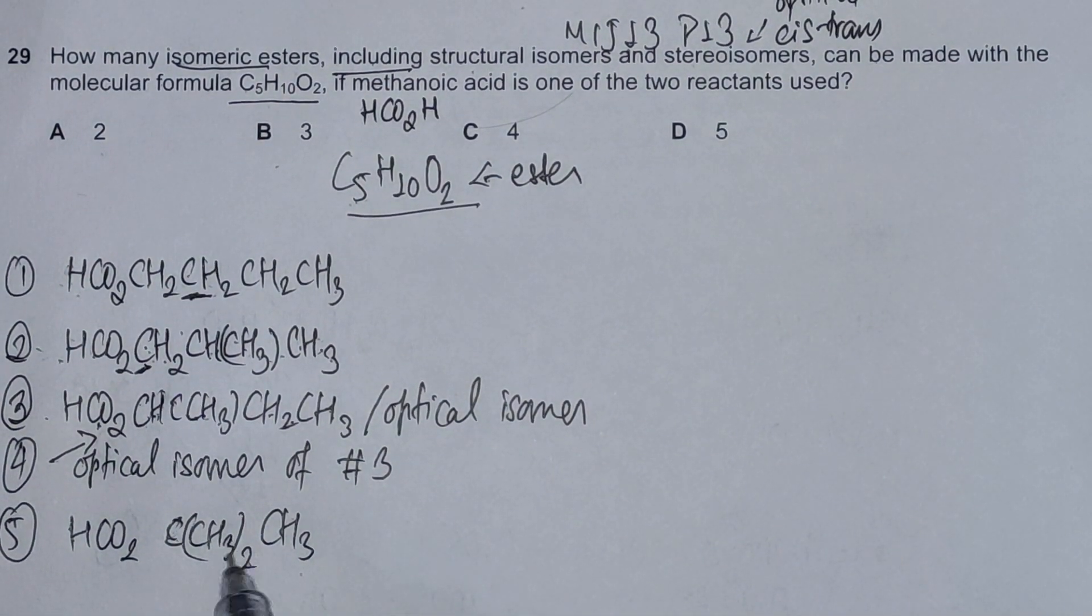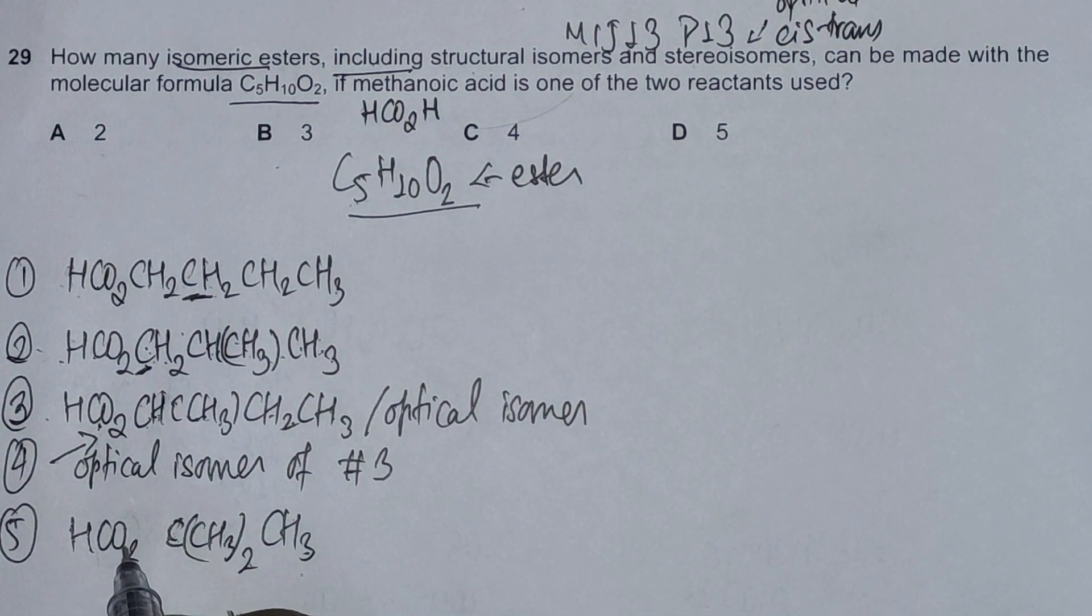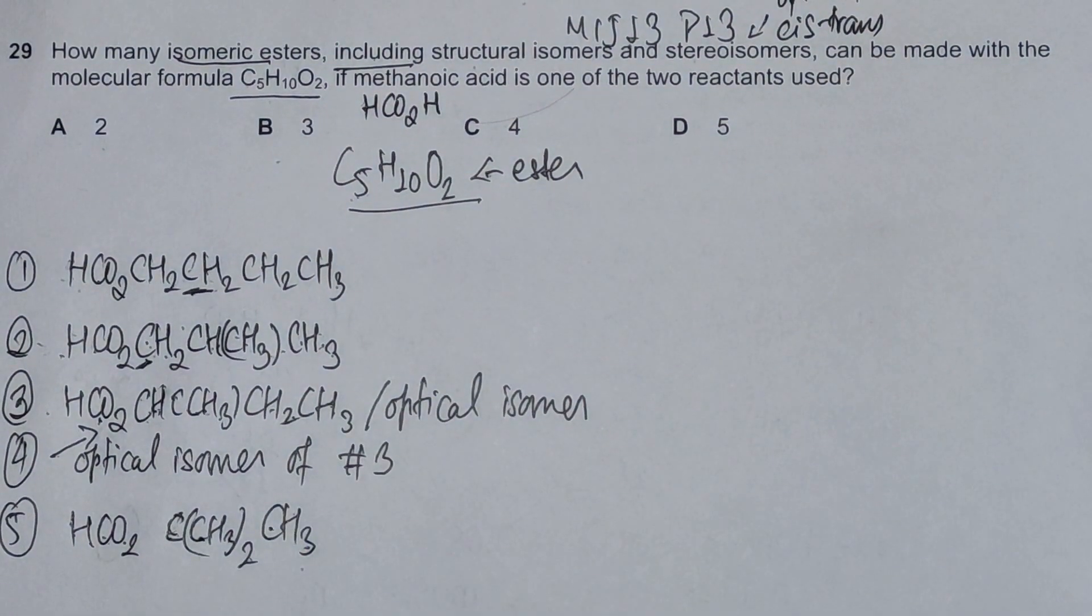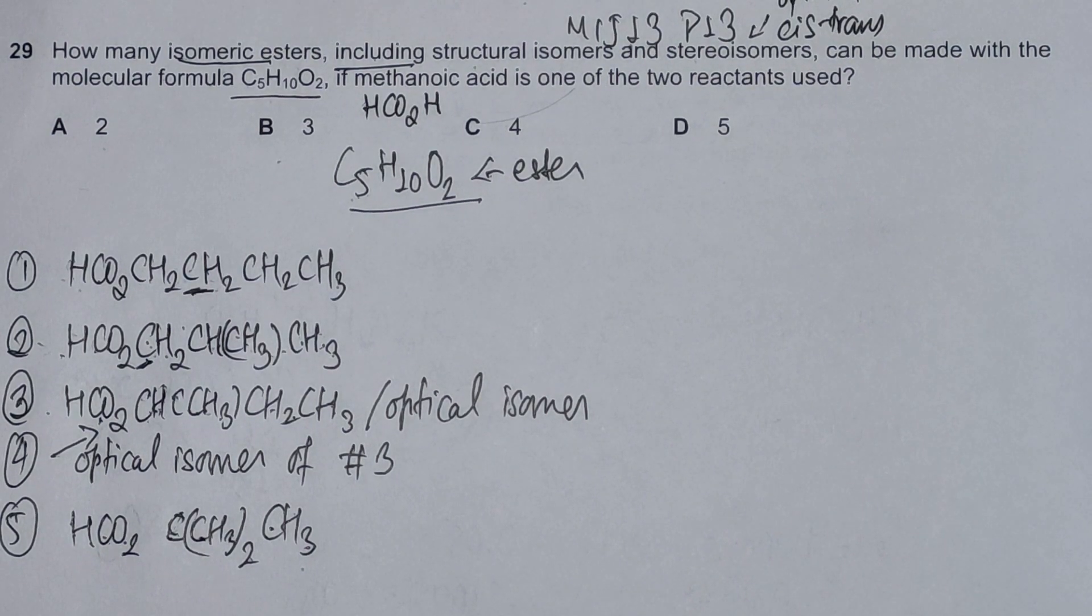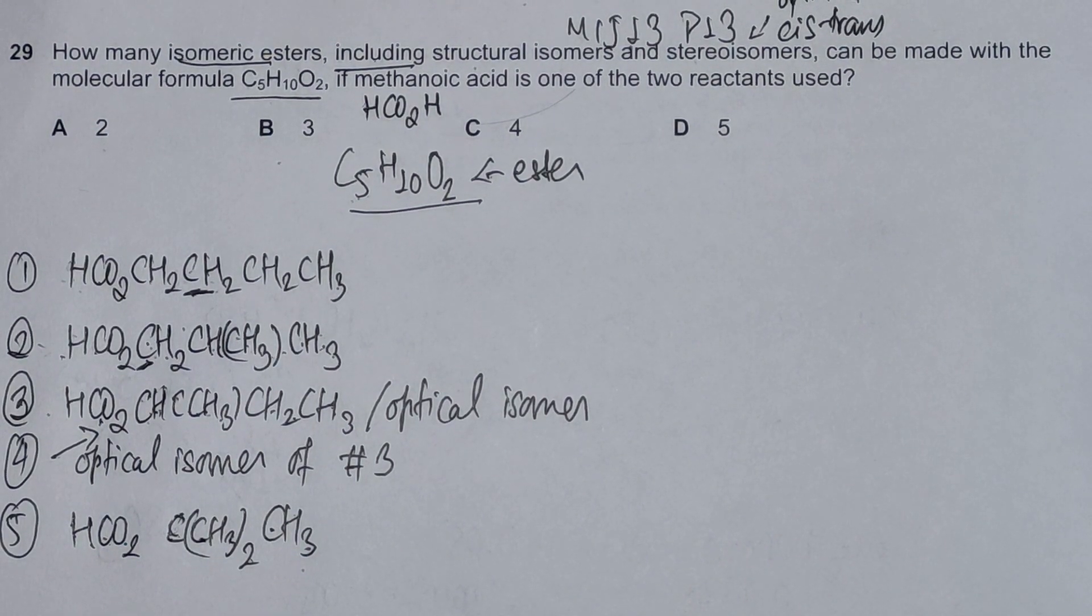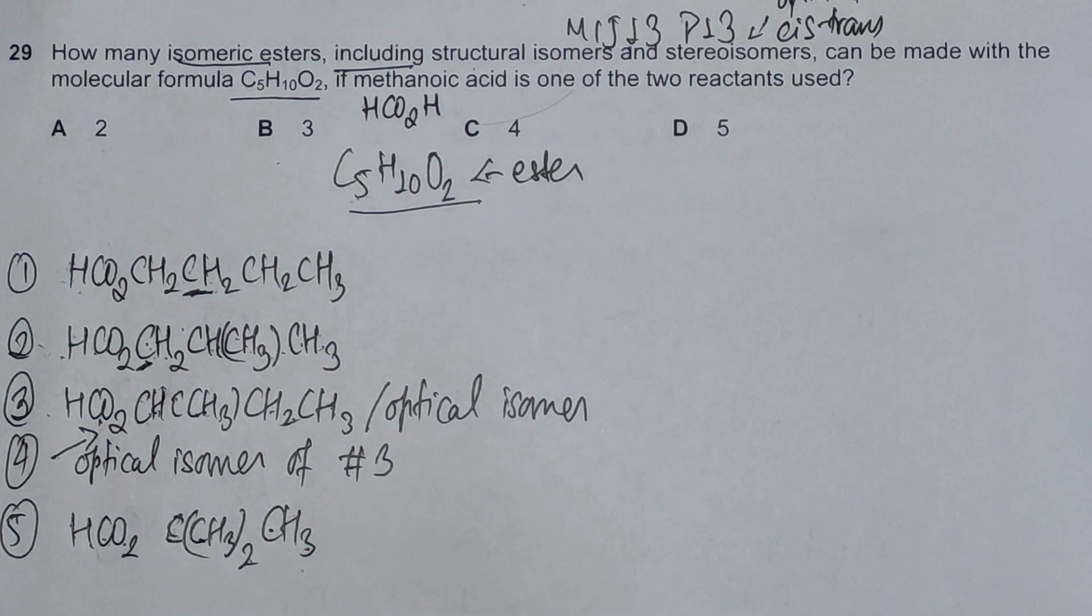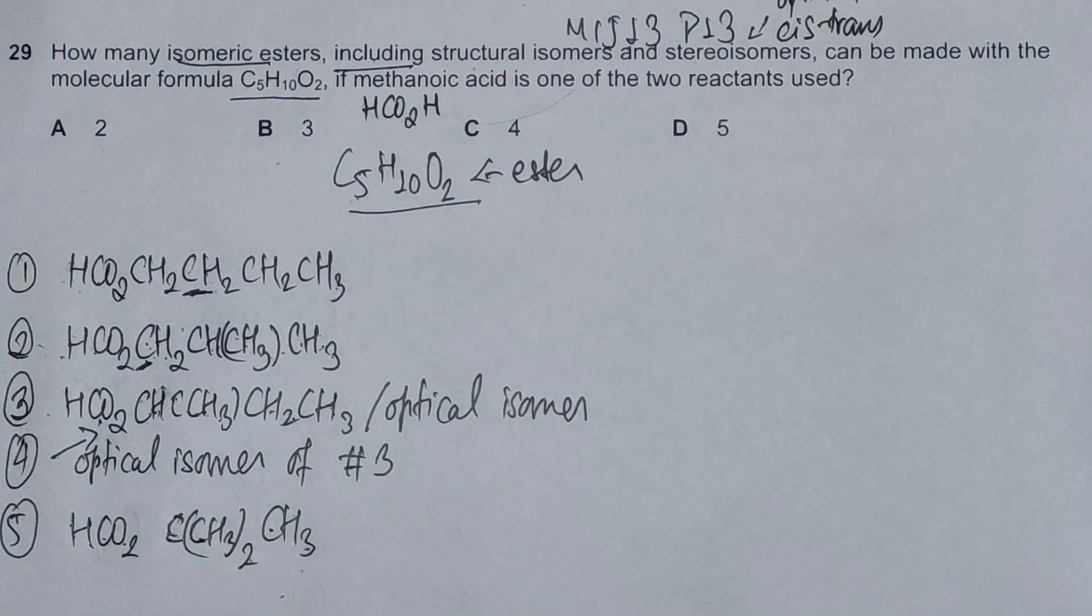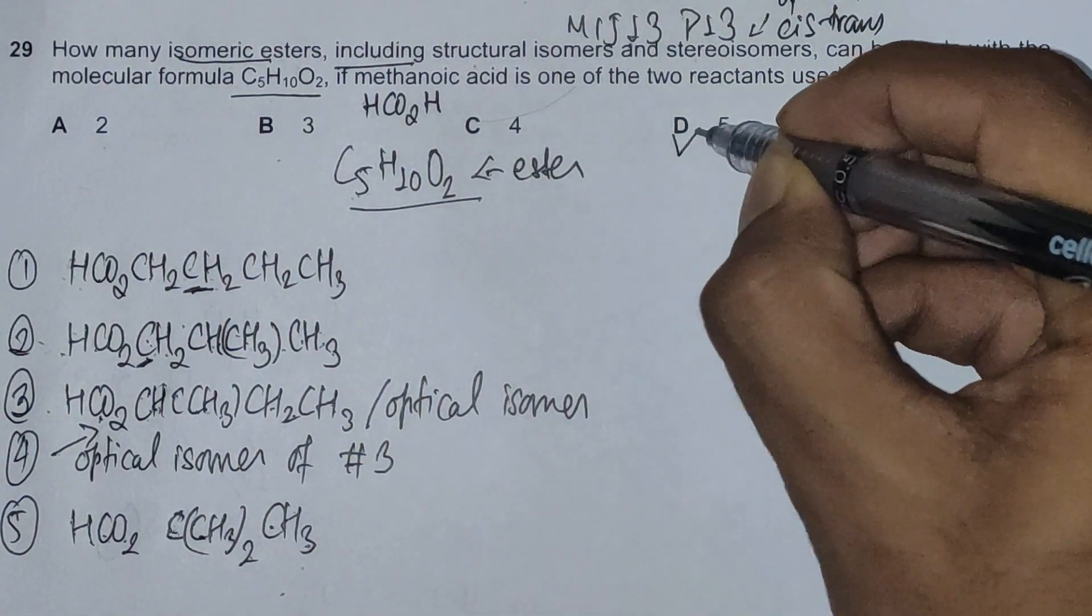All these 5 isomers with molecular formula C5H10O2 perfectly fit the description with methanoic acid being one of the two reactants. So this makes option D the correct answer.